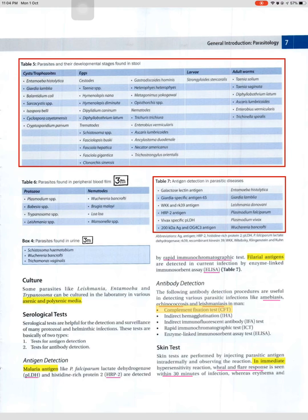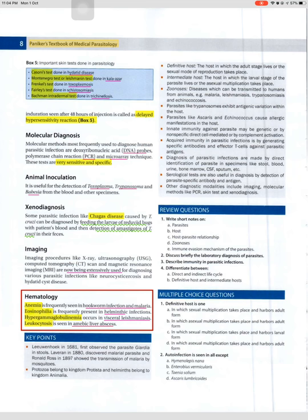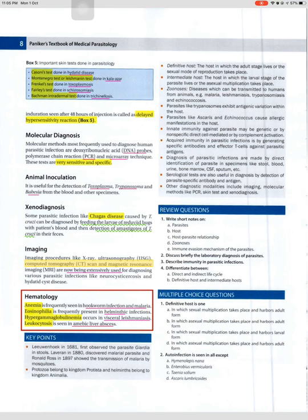Skin tests are performed by injecting parasitic antigen intradermally. Immediate hypersensitivity shows wheal and flare within 30 minutes; delayed hypersensitivity erythema is seen after 48 hours. Important skin tests in parasitology include: Casoni test (hydatid disease), Montenegro/leishmanin test (kala-azar), Frenkel's test (toxoplasmosis), and Fairley's test (schistosomiasis). Molecular diagnosis uses DNA probes, polymerase chain reaction (PCR), and microarray techniques — very sensitive and specific. Animal inoculation is useful for detection of Toxoplasma, Trypanosoma, and Babesia. Xenodiagnosis: Chagas disease caused by T. cruzi is diagnosed by feeding reduviid bug larvae with patient's blood and detecting amastigotes in their feces. Imaging procedures (X-ray, USG, CT scan, MRI) are used for neurocysticercosis and hydatid cyst disease. Hematology: anemia is seen in hookworm infection and malaria; eosinophilia in helminthic infections; hypoproteinemia in visceral leishmaniasis; leukocytosis in amoebic liver abscess.